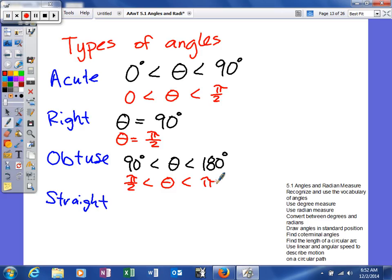And then lastly, a straight angle. I hope that won't be too bad. What we'll do is we'll say our theta is equal to 180 degrees. Or in radians, we could say theta is equal to pi. So there's some basic things. We're going to look at a couple more examples of types of angles.